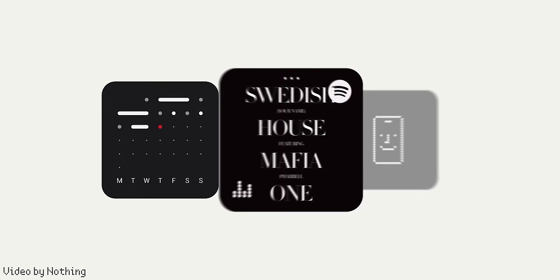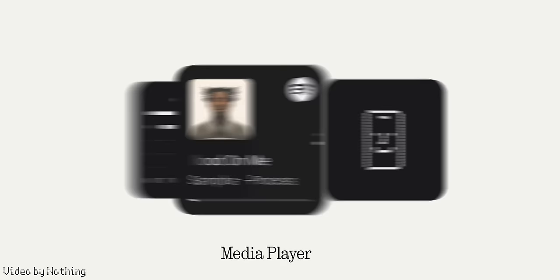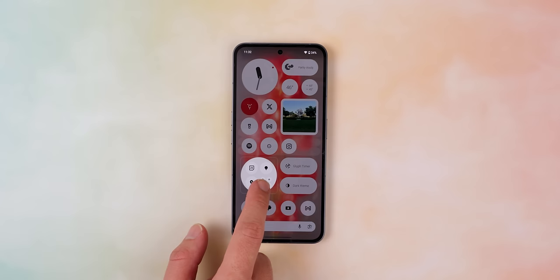They're planning to release a new pedometer widget with a neat animation of a little man walking and your steps data when you swipe down. Another one for the music player, which lets you change the song by just swiping right or left. And a Screen Time widget which turns red whenever you go over your limits — very creative.